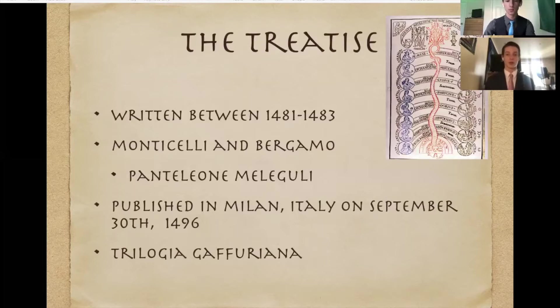So the treatise itself was written between the years 1481 and 1483 across two cities in Italy, Monticelli and Bergamo. Gaffurius' biographer Pantaleone Melegulli mentioned that it was originally started in Monticelli, but that there was some controversy as to whether or not portions of it were written in Bergamo or if it was finished in Bergamo. But the official publication date is September 30th, 1496 in Milan, Italy.